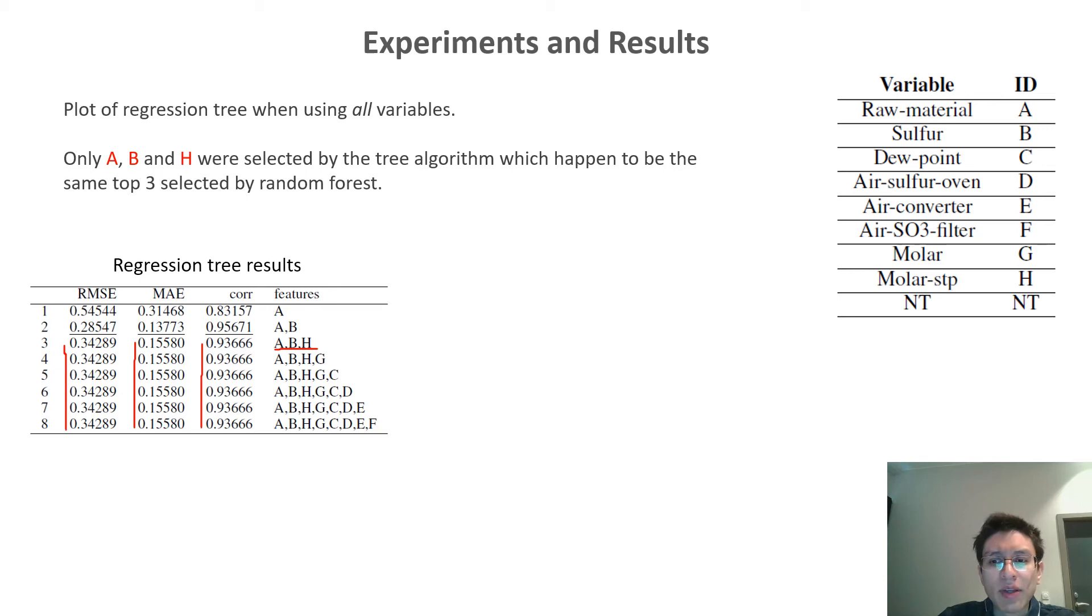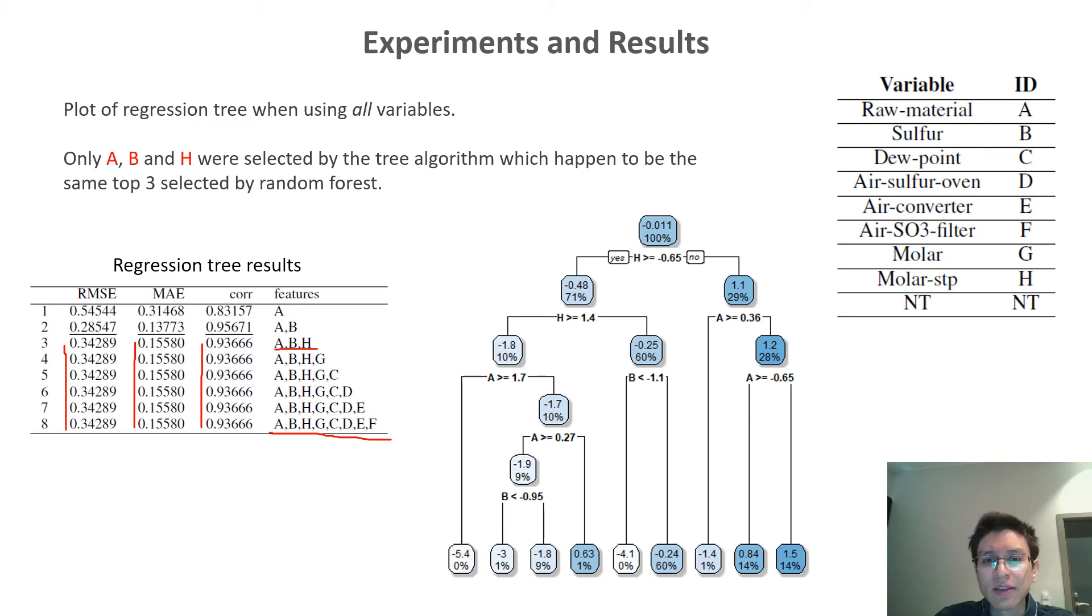In order to investigate why this was happening, we decided to plot the resulting regression tree when using all the eight variables. This is the resulting regression tree, and what we can see here is that the regression tree algorithm only selected variables H, A, and B, which also happened to be the most important ones selected by the random forest algorithm. So this adds evidence that these are the most important variables.